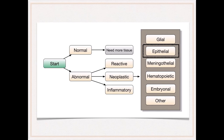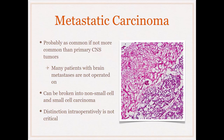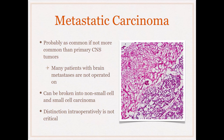Moving from glial tumors to epithelial tumors — using the more generic term epithelioid — by and large we're dealing with metastatic carcinomas. These are probably as common, if not more common, than primary CNS tumors — roughly 50/50 in an academic practice. Intraoperatively, you don't really need to differentiate between adenocarcinoma and squamous cell carcinoma or small cell; the distinction intraoperatively is not critical, since in the brain they're taking out the tumor regardless, because it's causing mass effect.